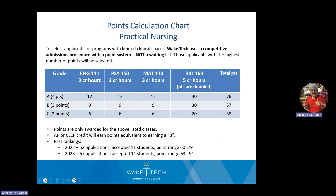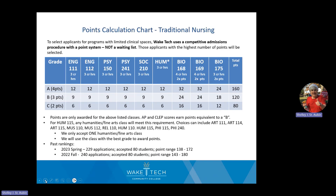For the nursing program, the points work the same way: A's are 4, B's are 3, C's are 2, multiplied by the credit hour. For nursing, there are three biology courses: anatomy and physiology 1, anatomy and physiology 2, and microbiology. Due to their importance, all three are doubled. AP and CLEP credit is still worth a B.